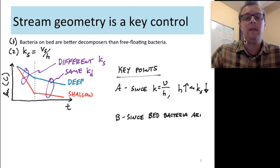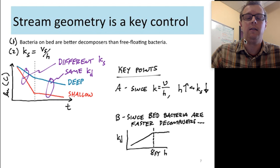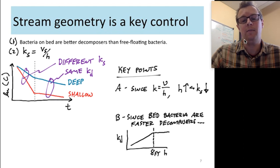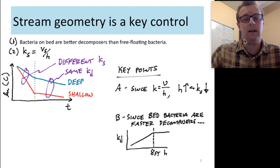Point B, since those bed bacteria are faster decomposers, we're going to see some scaling. Chopra suggests that for depths up to about eight feet, you do see a scaling. So think from small headwater streams to relatively medium-sized rivers, we're going to see a scaling. And then at some point, we have so much flow that that depth no longer matters. And that point is taken to be at about eight feet. So for shallow rivers, we are going to have to think about scaling with depth. For larger rivers, we're not.